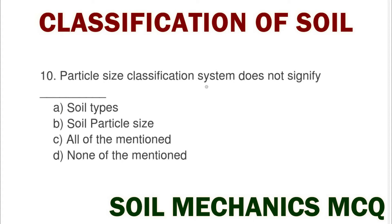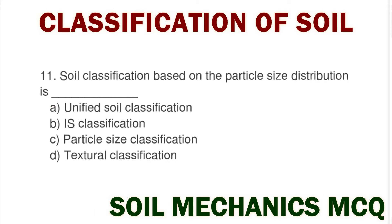Next question: the particle size classification system does not signify option A soil types, option B soil particle size, option C all of mentioned, option D none of mentioned. The correct answer is option A soil types.